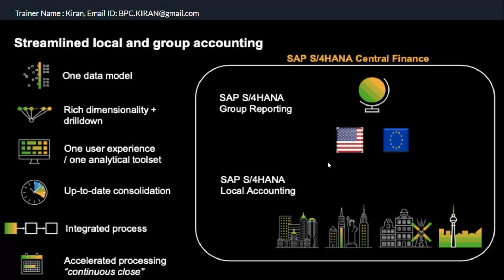Another benefit is that both local and group reporting use Fiori as the frontend. You can release data any number of times. Whenever you post transactions and the period closes, even if FI users post after the period close — opening and posting again — you can easily handle those conditions when local accounting and group reporting are in one system.